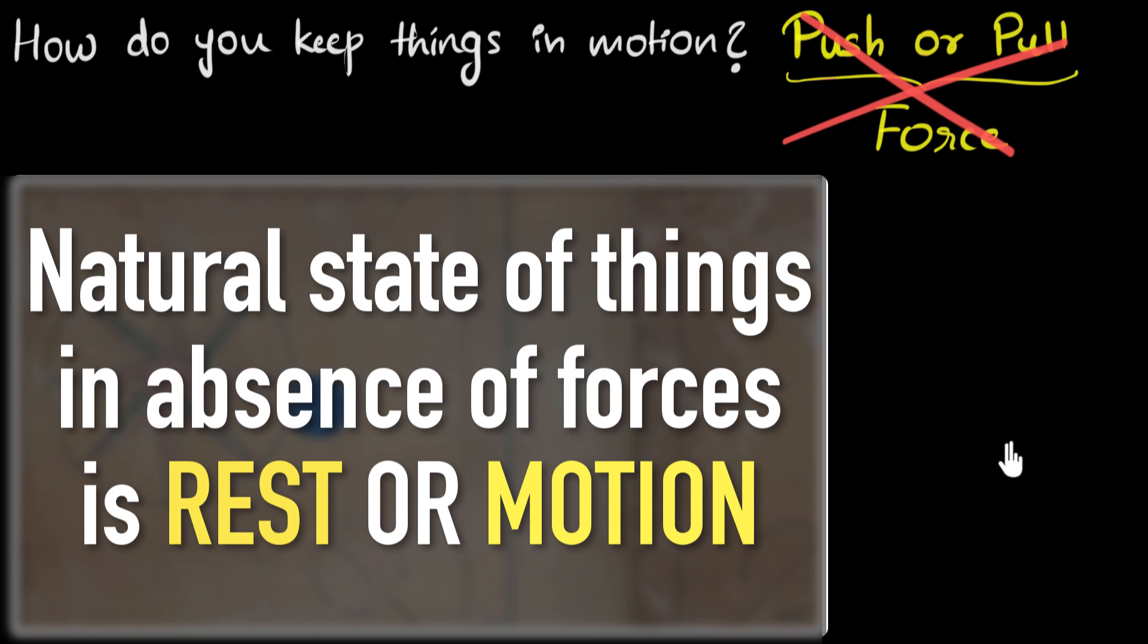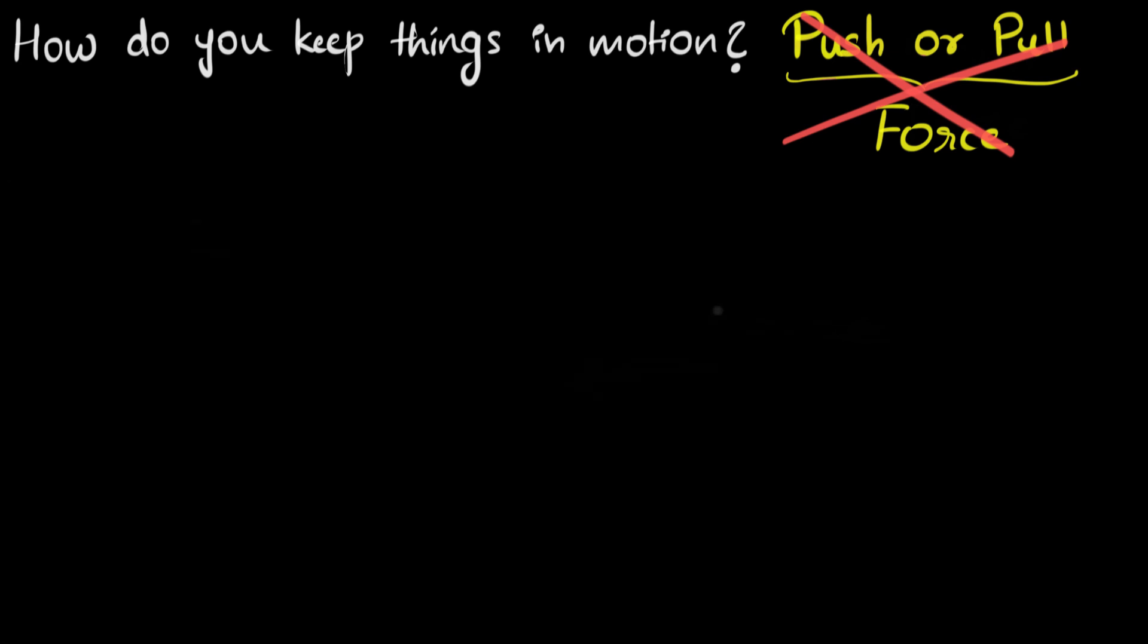And I'll tell you what helps me is to think about celestial things. Like the planets or the stars or the galaxies, they are in perpetual motion. Yes, their motion is a little complicated because there are forces acting on them. But they are always moving. Why don't they stop? Well, because things in motion tend to stay in motion.